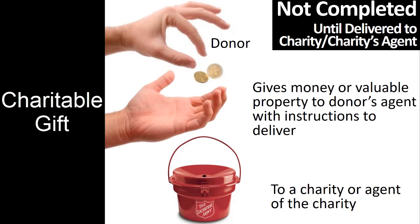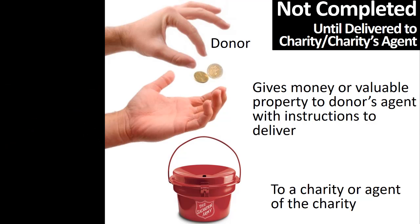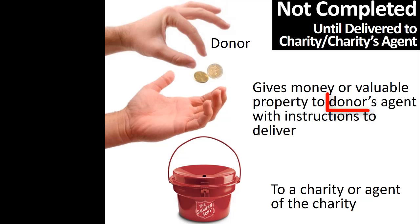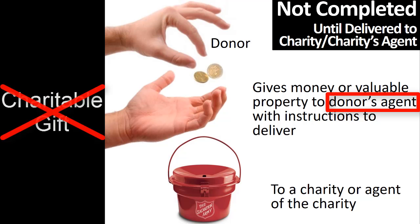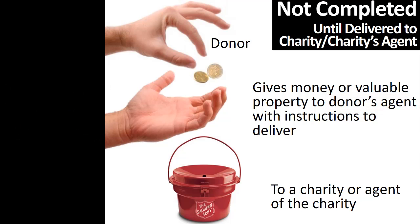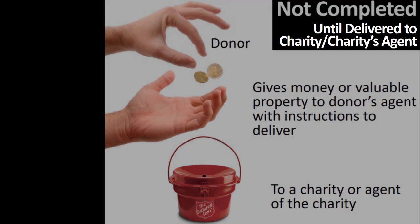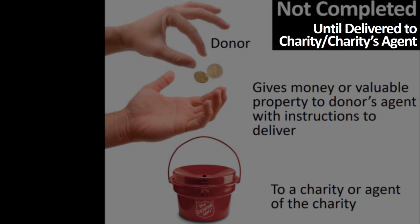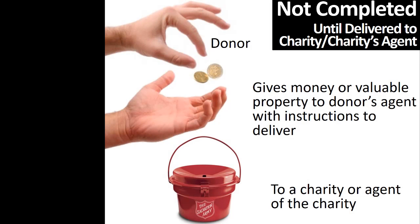Another example of an action that is not a completed gift is when a donor gives money or valuable property to the donor's agent — in other words, the donor's representative — with instructions to deliver the gift to a charity or agent of the charity. Because the money or valuable property is still in the hands of the donor's representative, it has not yet become a completed gift. Once the money or valuable property is given to the charity or the charity's representative or agent, then, and only then, is there a deductible charitable gift.